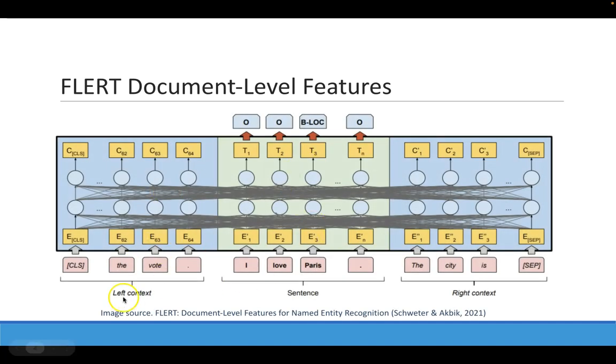This figure shows the FLIRT approach, which was proposed in the paper FLIRT document-level features for NER. The idea of this approach is quite simple. After tokenizing all the sentences into tokens and subtokens,